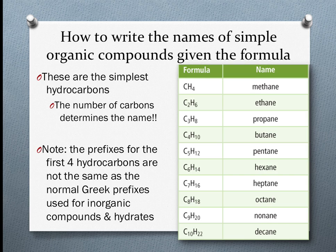The one carbon hydrocarbon is called methane. Two is ethane. Three is propane. Four carbons in the hydrocarbon makes it butane. Five is pentane, and so on, using the Greek prefixes.